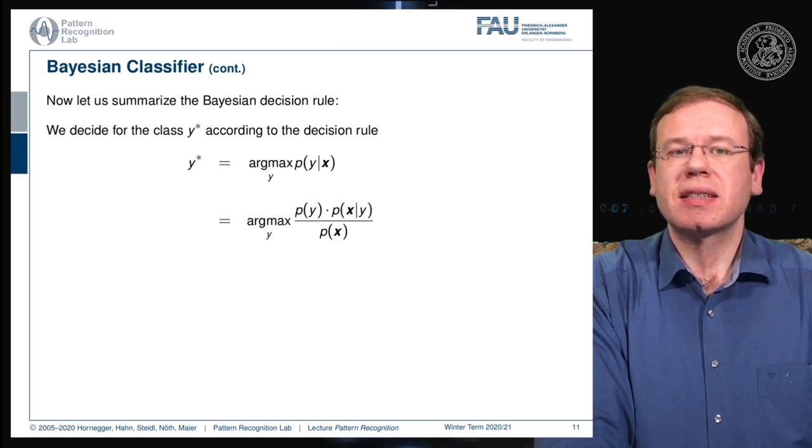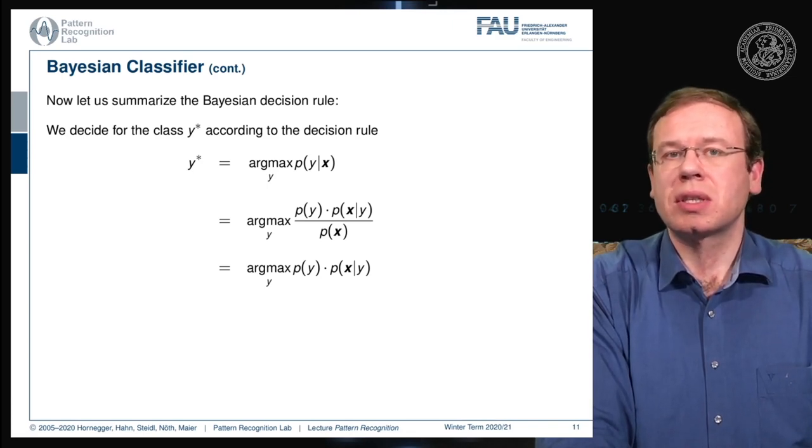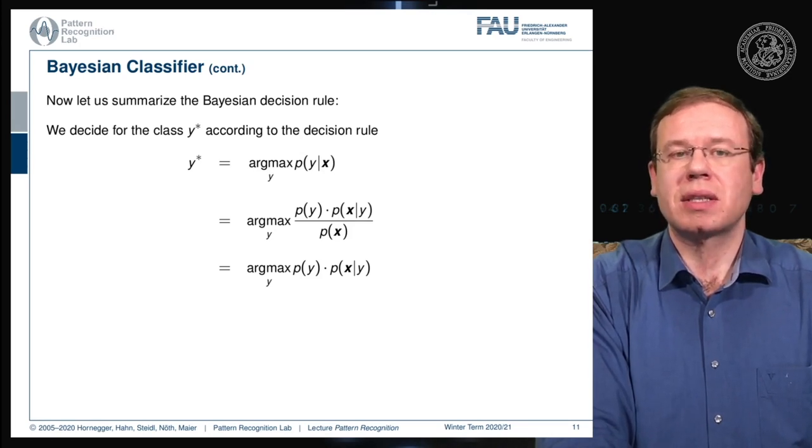Since this is a maximization over y we can actually get rid of the fraction here. We can remove p(x) because it's not changing the position of our maximum, so we can simply neglect it for the maximization.